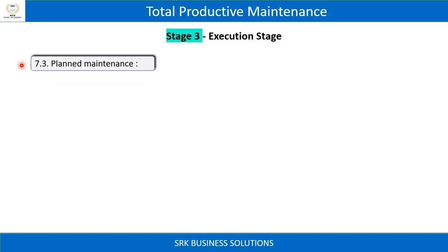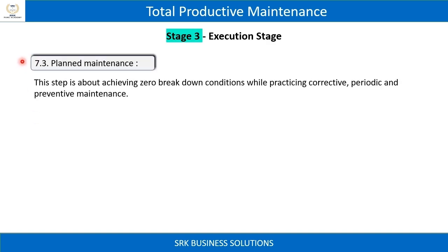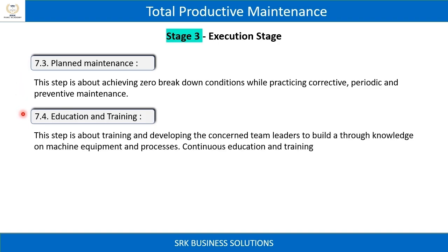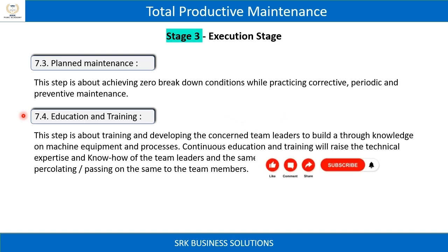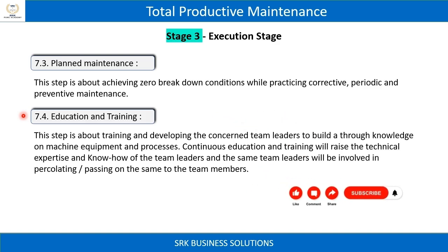7.3 Planned Maintenance: Achieving zero breakdown conditions while practicing corrective, periodic, and preventive maintenance. 7.4 Education and Training: Training and developing team leaders to build true knowledge on machine equipment and processes. Continuous education and training will raise technical expertise, and team leaders will be involved in passing this knowledge on to team members.